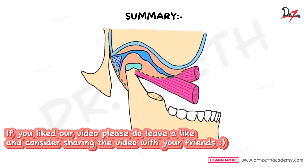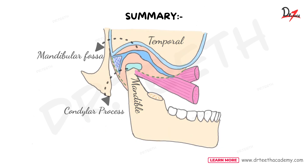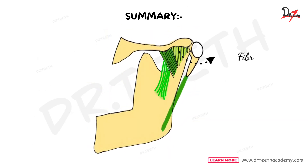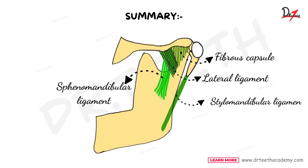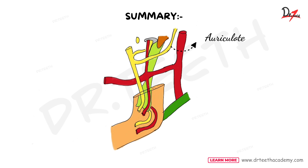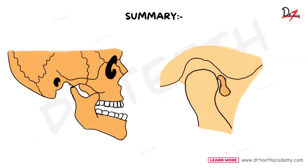Let's summarize: TMJ is a synovial joint of the condylar variety, present between the temporal and the mandible bone. The upper articulating surface is formed by the mandibular fossa or glenoid fossa of the temporal bone, and the lower articulating surface is formed by the condylar process of the mandible. There are four ligaments: fibrous capsule, lateral temporomandibular ligament, sphenomandibular ligament, and stylomandibular ligament. It is supplied by the auriculotemporal nerve and masseteric nerve and drains into the upper cervical lymph nodes. Clinically, dislocation of the mandible and derangement of the articular disc are important topics.